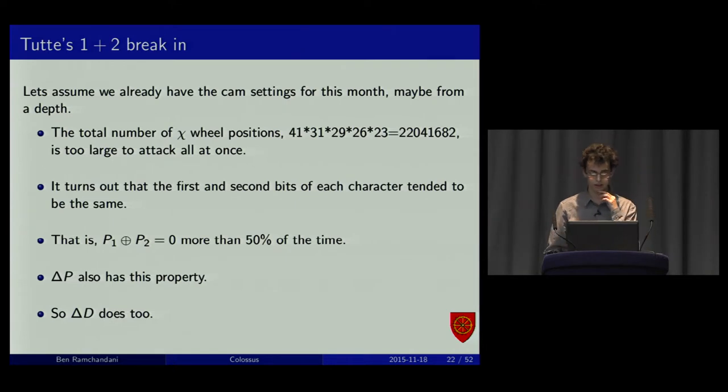We can carry on with this. And this kind of gives us a way into working out just what the chi component is on its own without having to worry too much about psi. Bill Tutte also invented what's known as the one-two break-in. If you just look at the first two bits of each character, it turned out they were usually the same. So, they're usually XOR to zero. And if you diff two characters that have this property, the diffed plaintext will also have this property. And because the diffed pseudo plaintext is the same half the time, it also has this property, though to a slightly lesser extent. This gives us a way of getting the first two bits, provided we can do all this computation.